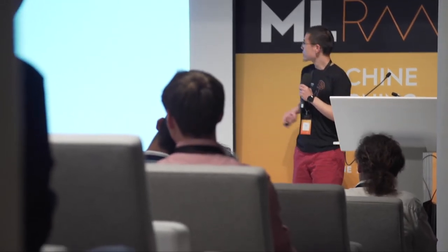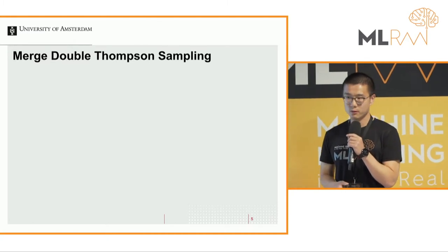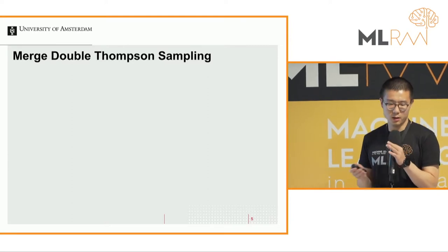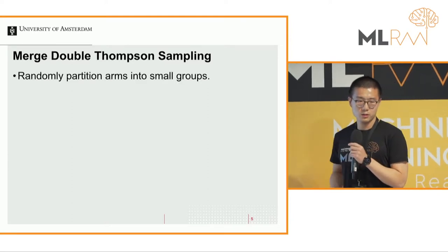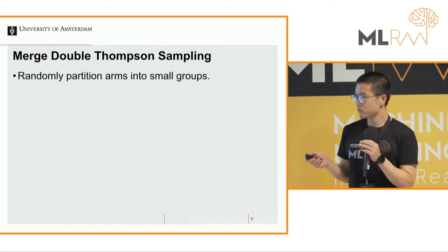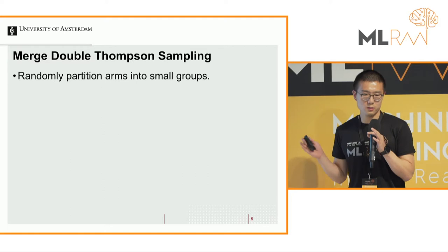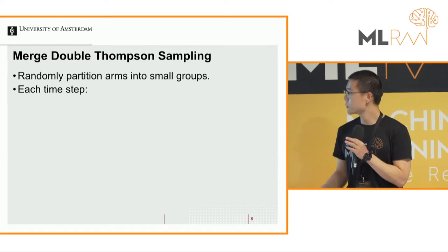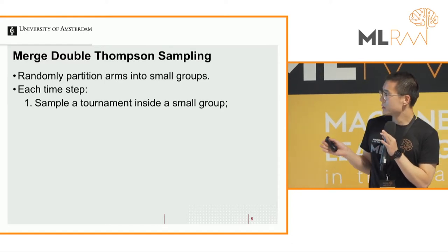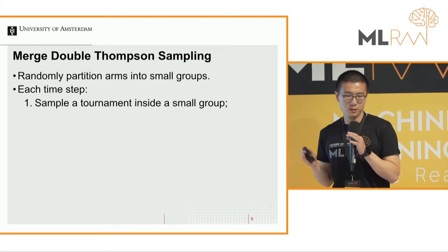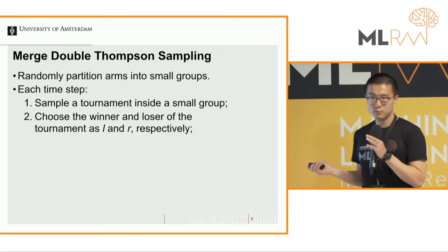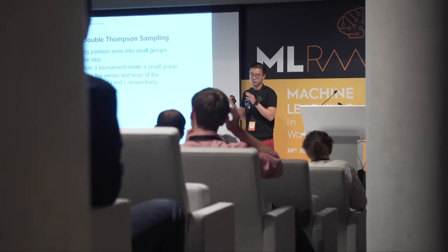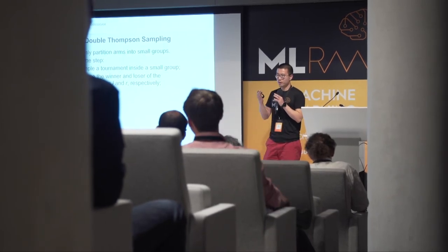Our algorithm is called merge double Thompson sampling. 'Merge' comes from merge sort — we use a divide-and-conquer strategy. First, we randomly partition arms into small groups, and all comparisons happen only within these small groups. At each time step, we use Thompson sampling to sample a tournament inside these small groups, then choose the winner and loser of this tournament as the left arm and right arm.